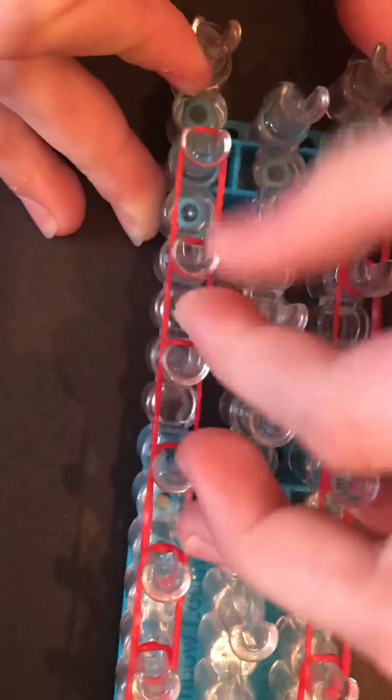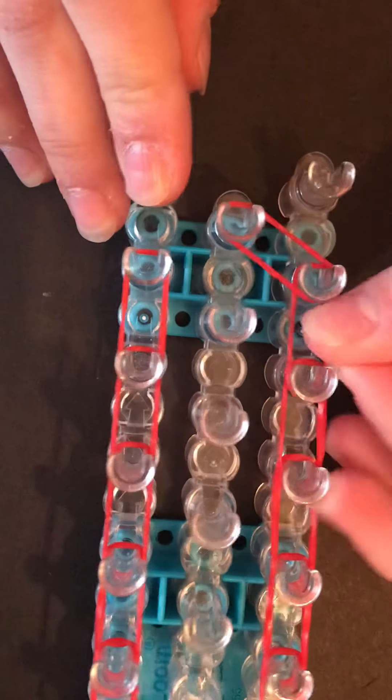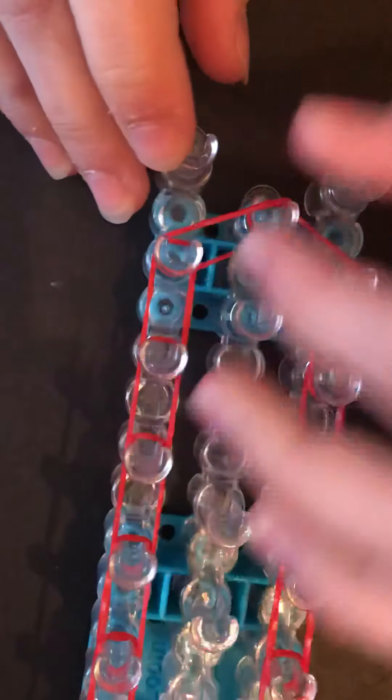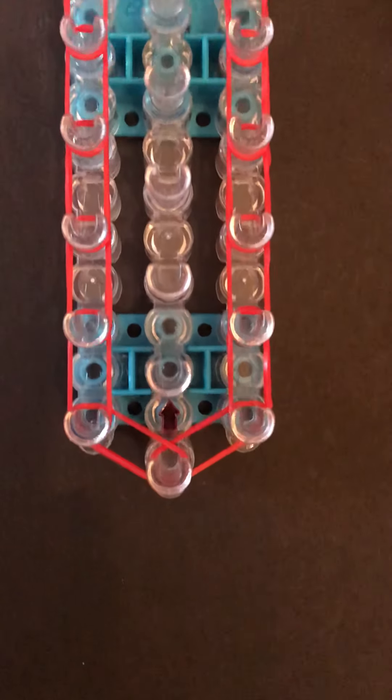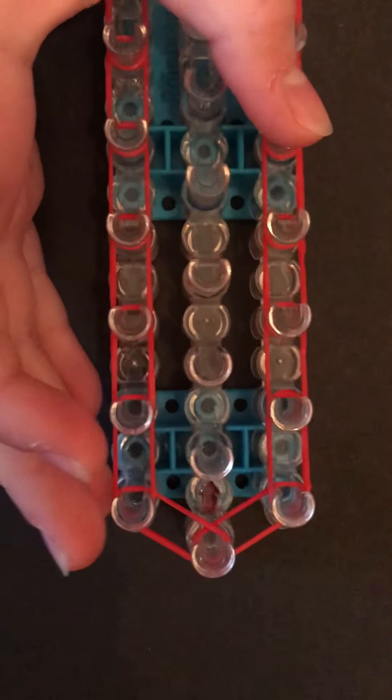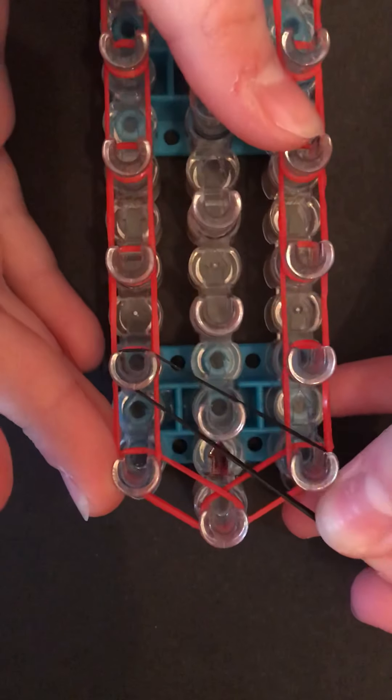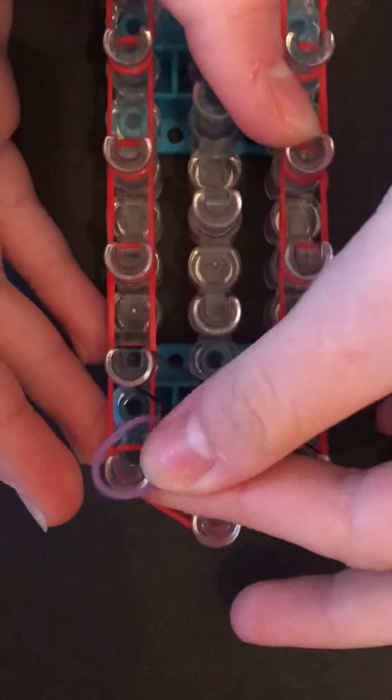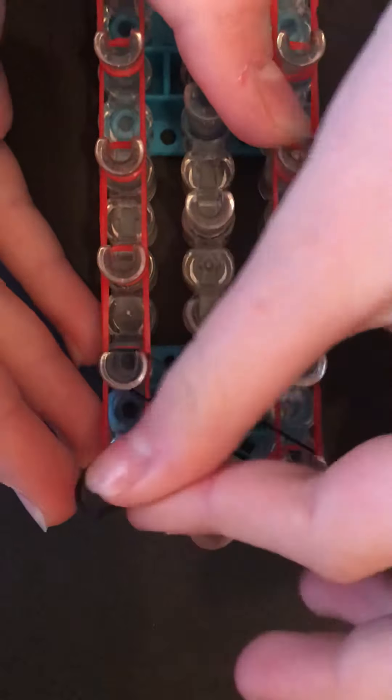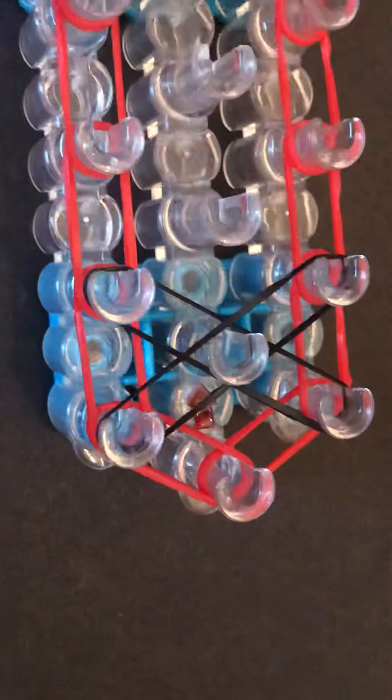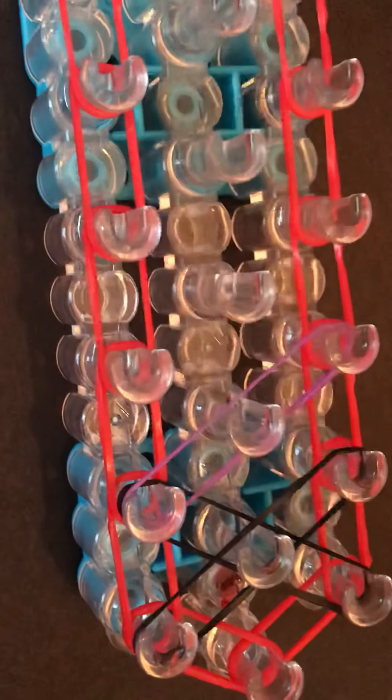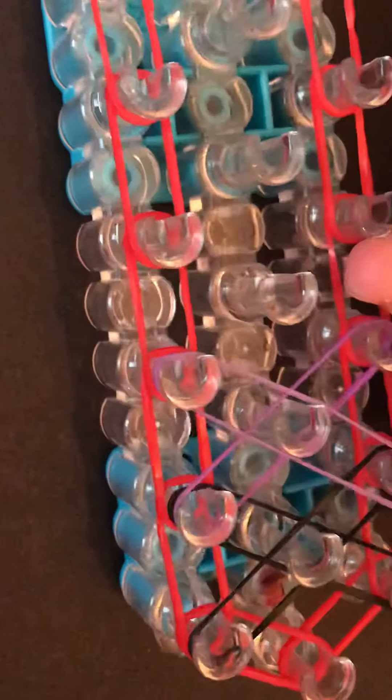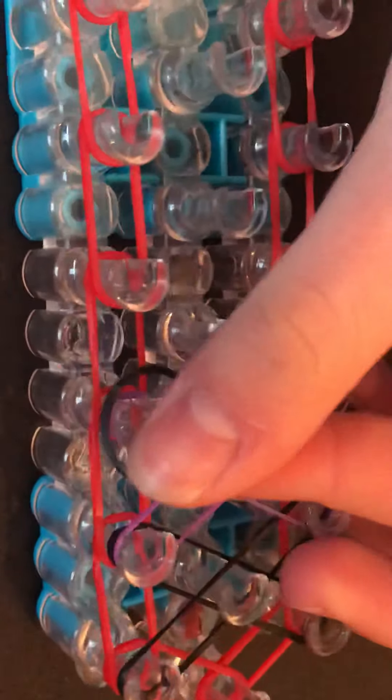Now once you get to the second to last pegs, you're just going to go into the middle like this on both sides. Now your loom should look like this. So now we're going to make X's on the loom. So go like this with just one band so that should look like an X and make sure you're going over this pin. Then just go over that band and stretch it across your loom just like that. Now just do that all the way down.